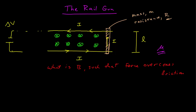So let's calculate the force on the bar. The Lorentz force, as applied to a current-carrying wire, is given by the current through the wire — for a straight wire — times this vector L, which has a magnitude of the length of the straight wire, and the direction of this vector is in the direction of the current, cross the magnetic field.